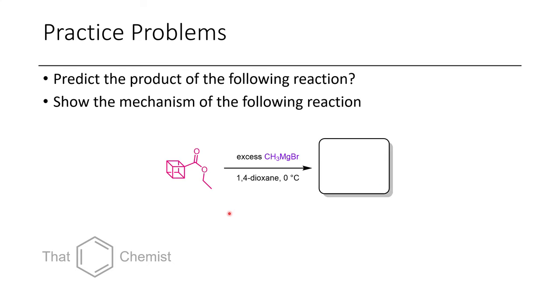And in this final one, I want you to show the product of what we would get when we react this ester derivative of cubane with methylmagnesium bromide in 1,4-dioxane. And when you're doing this, I want you to show the mechanism of this reaction as well.